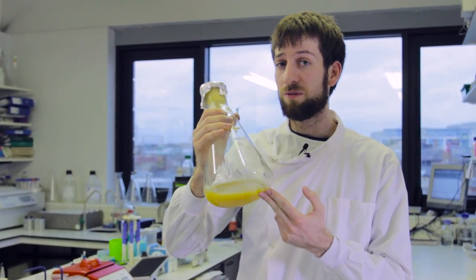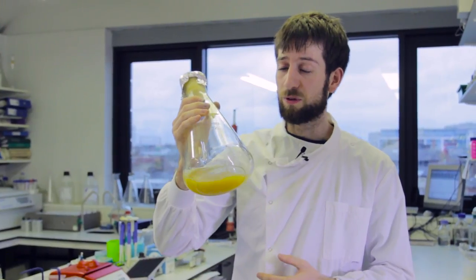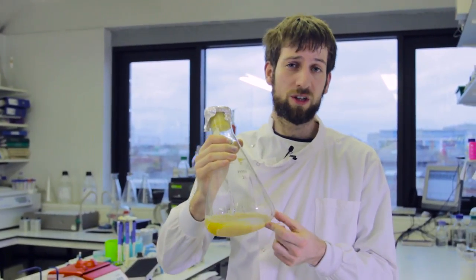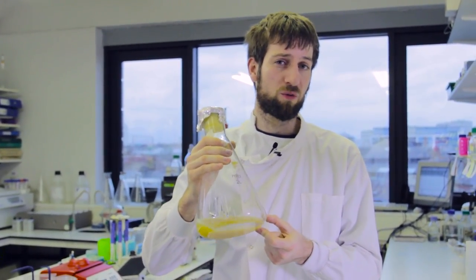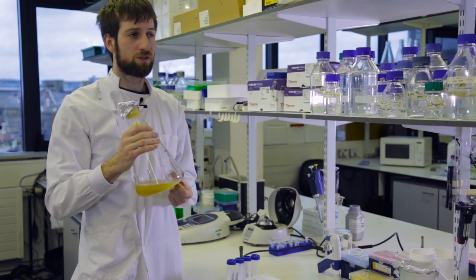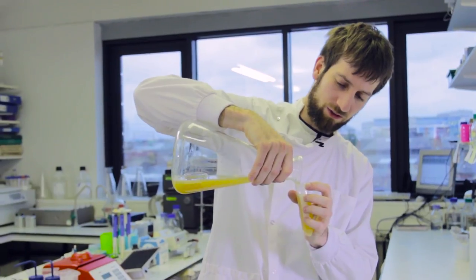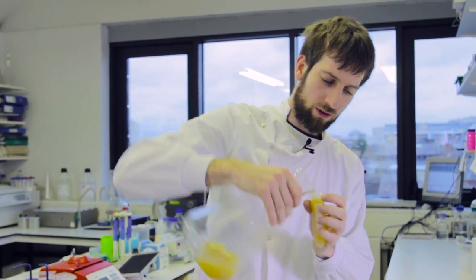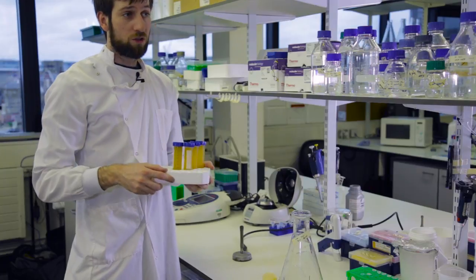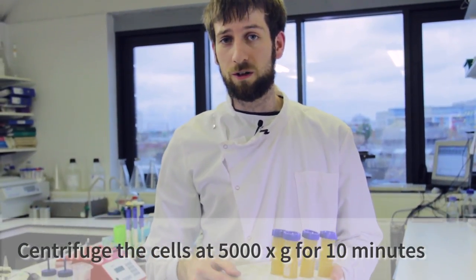Now you can see our cells have grown to an even higher density and hopefully produced lots of our protein. We need to separate the cells from the spent media in order to purify our protein. We do this by using centrifugation. So we'll just carefully pour the cells into the tubes and repeat until we run out of cells. Now we'll take the tubes to the centrifuge and spin them to pellet the cells.